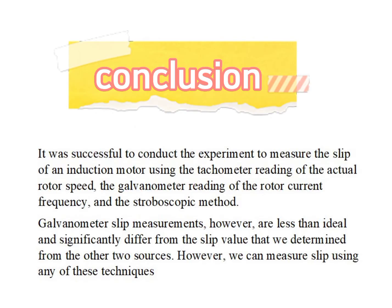From this practical, we can conclude that the measurement of slip can be done using the tachometer reading of actual rotor speed, the galvanometer reading of the rotor current frequency, and the stroboscopic method. The values of slip for all these methods were close to each other except for the galvanometer whose value deviated further from the other two. However, this practical validated the use of any three of these techniques to measure the slip of an induction motor.